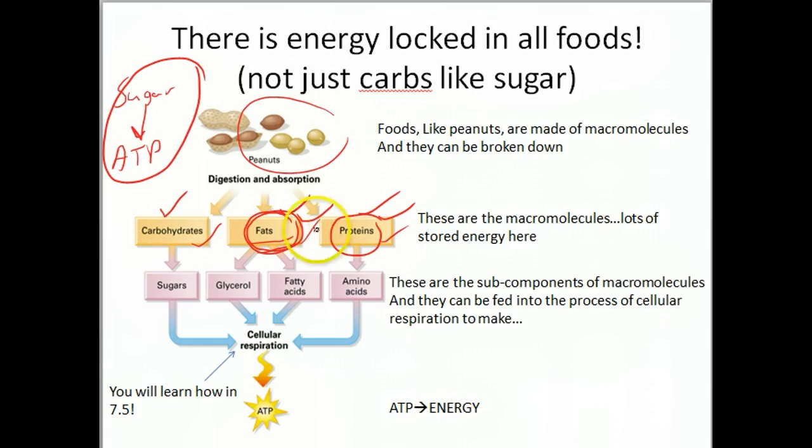You take carbohydrates, fats, and proteins and break them down. You can take these macromolecules and break them down into their constituents, their subcomponents. You can break carbohydrates, like complex carbohydrate chains of sugars, down into their monomer sugars.